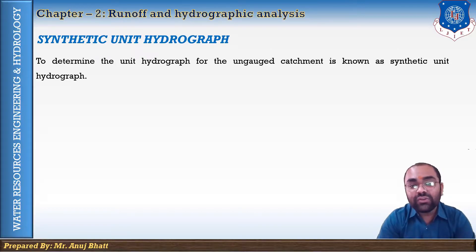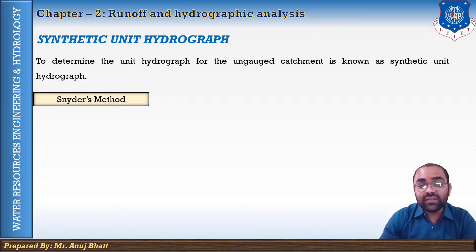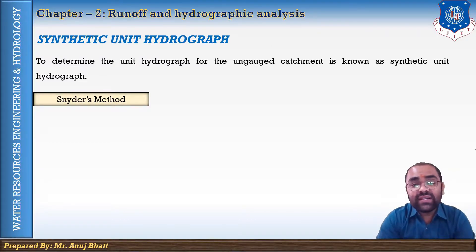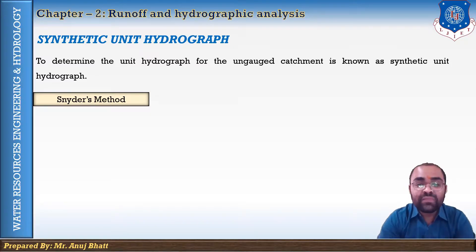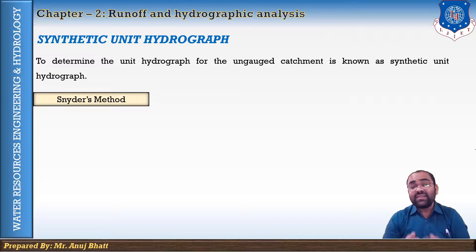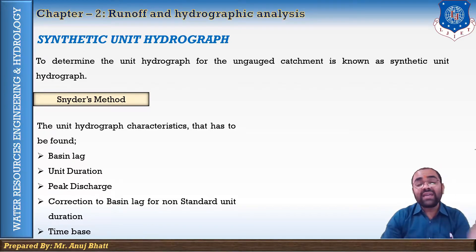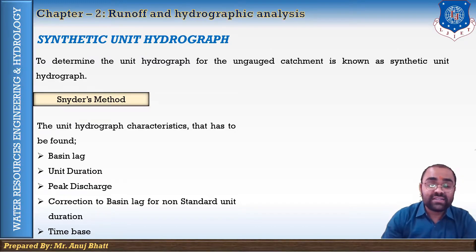Several techniques are adopted for establishing the relation between basin characteristics and unit hydrograph characteristics, but the most commonly used method is Snyder's method. Snyder studied a large number of catchment basins in the Appalachian Highlands of the eastern United States and developed a set of empirical equations connecting the basin characteristics with the unit hydrograph characteristics.